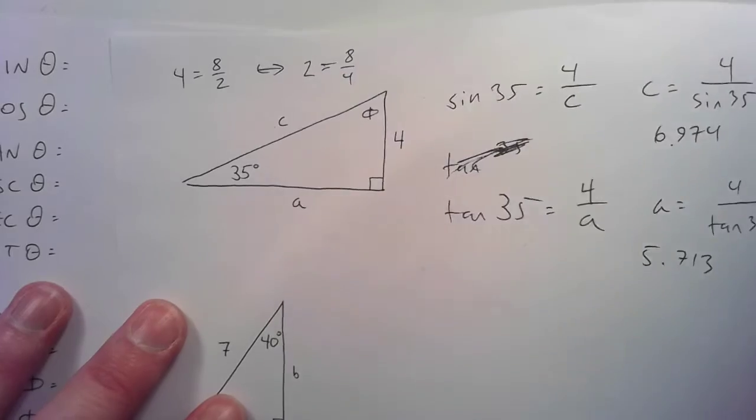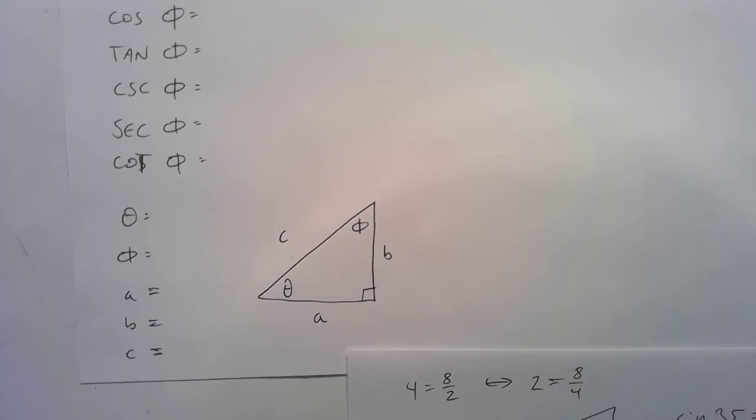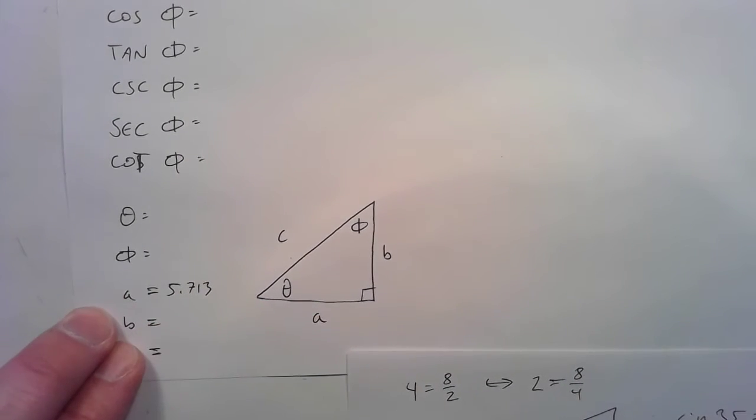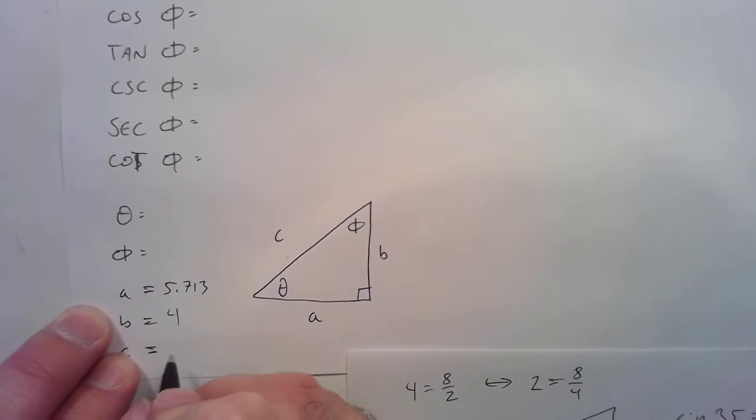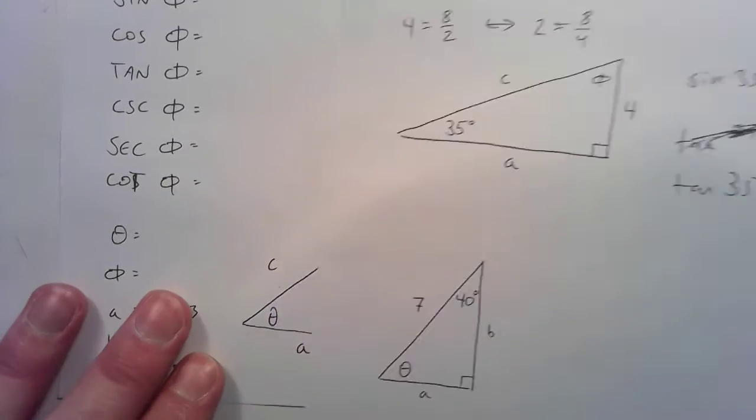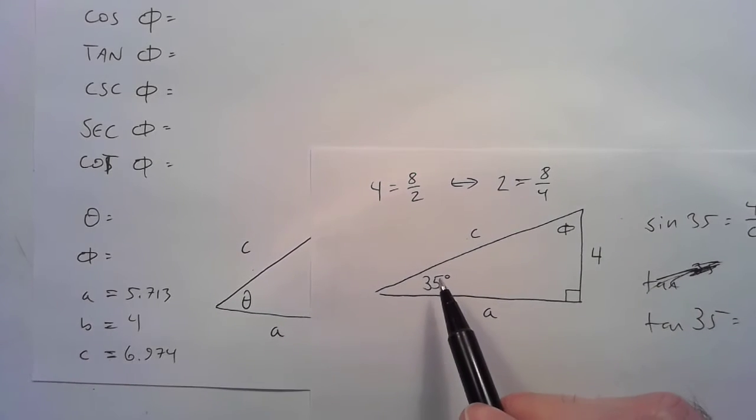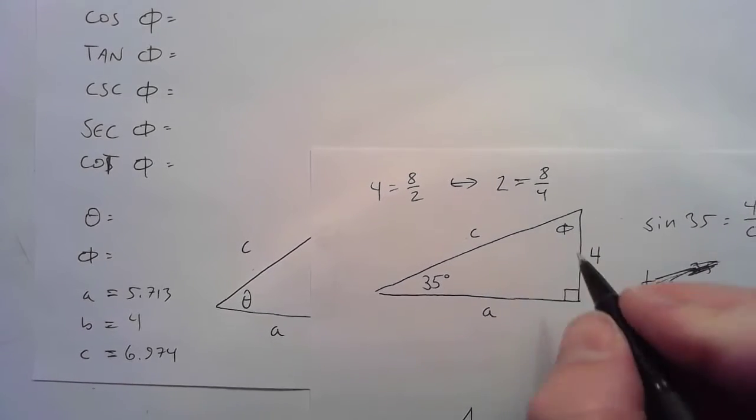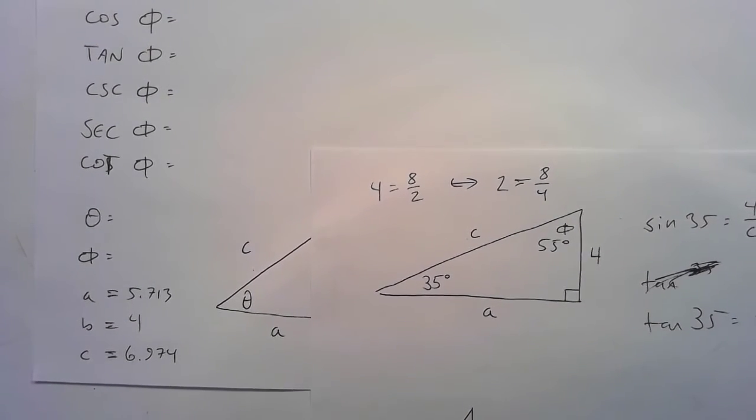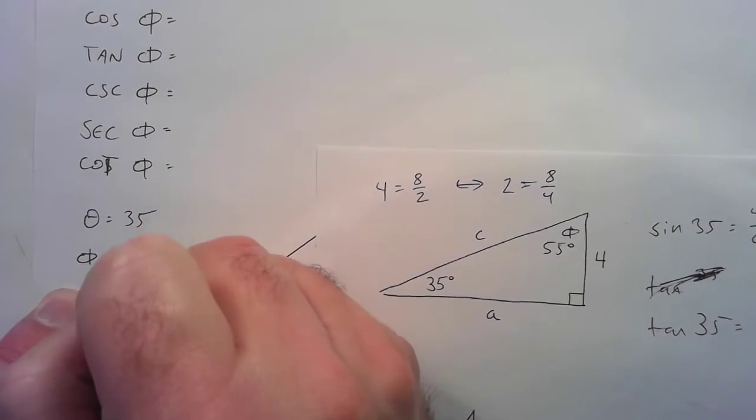So, if I'm recording values, I've got values for A, B, and C now. A is 5.713, B was 4, and C was 6.974. Speaking of those basic values, this is 90, that's 35. There can only be one angle that fits there, and that would be 55. Because 55 plus 35 equals 90. So theta is 35, and phi is 55.